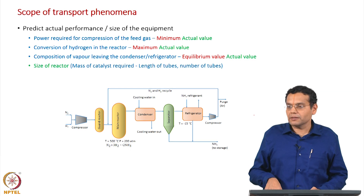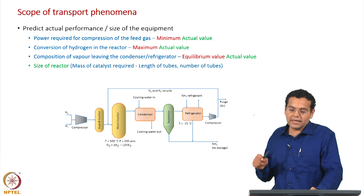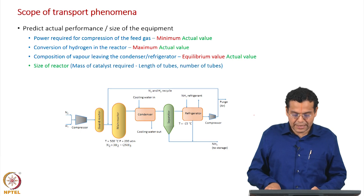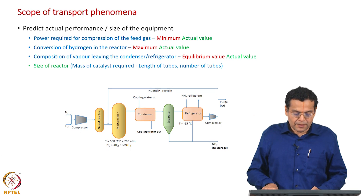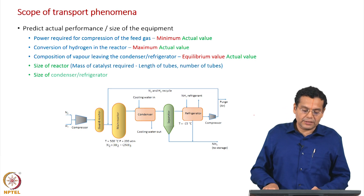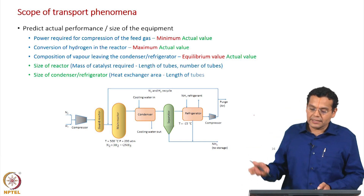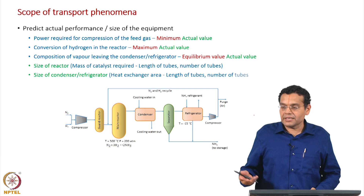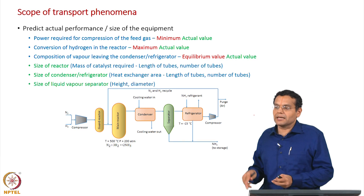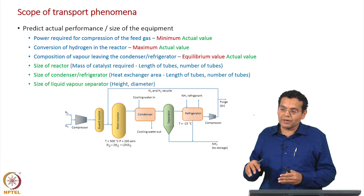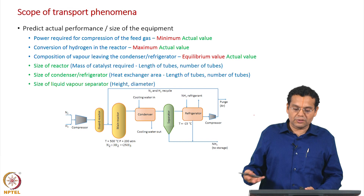The moment we use a transfer phenomena approach, we can determine the size of the reactor — meaning the mass of catalyst, length of tubes, number of tubes. We can find out the size of the condenser/refrigerator, which is a heat exchanger: the area of heat exchanger, the length of tubes, number of tubes, and the size of the liquid-vapor separator, namely height and diameter. To find out the size of these equipments, we need a transfer phenomena approach.